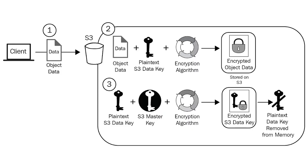Here is the overall diagram. The client's responsibility is only to upload the data — S3 takes care of the rest. The object data plus plain text key goes through the encryption algorithm and the encrypted object data is stored. The plain text S3 data key and S3 master key are provided as input to the encryption algorithm, producing the encrypted S3 data key. The plain text data key is then removed from memory. That is how the SSE-S3 encryption workflow operates.